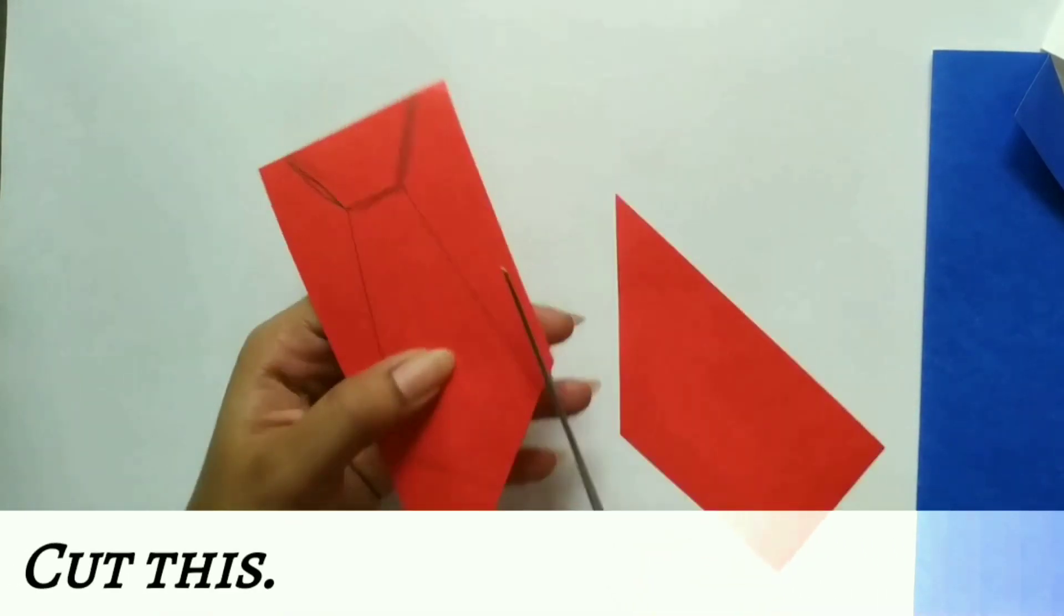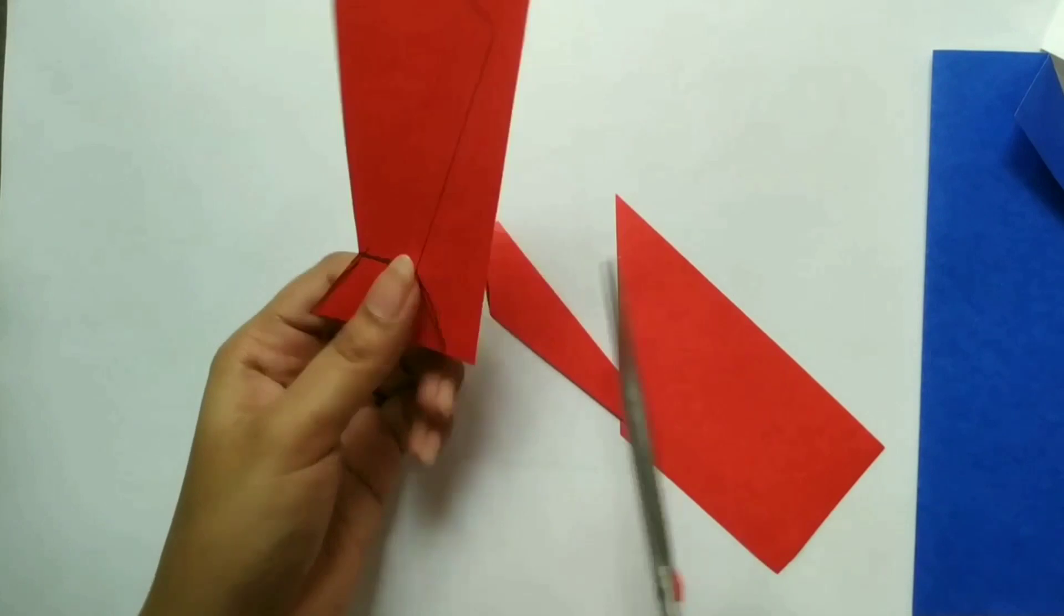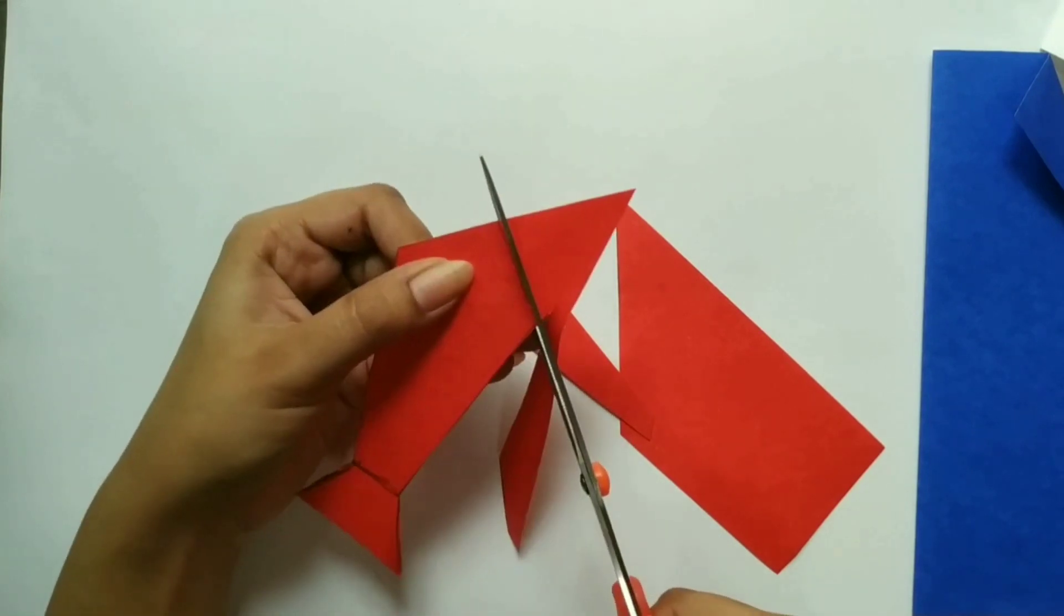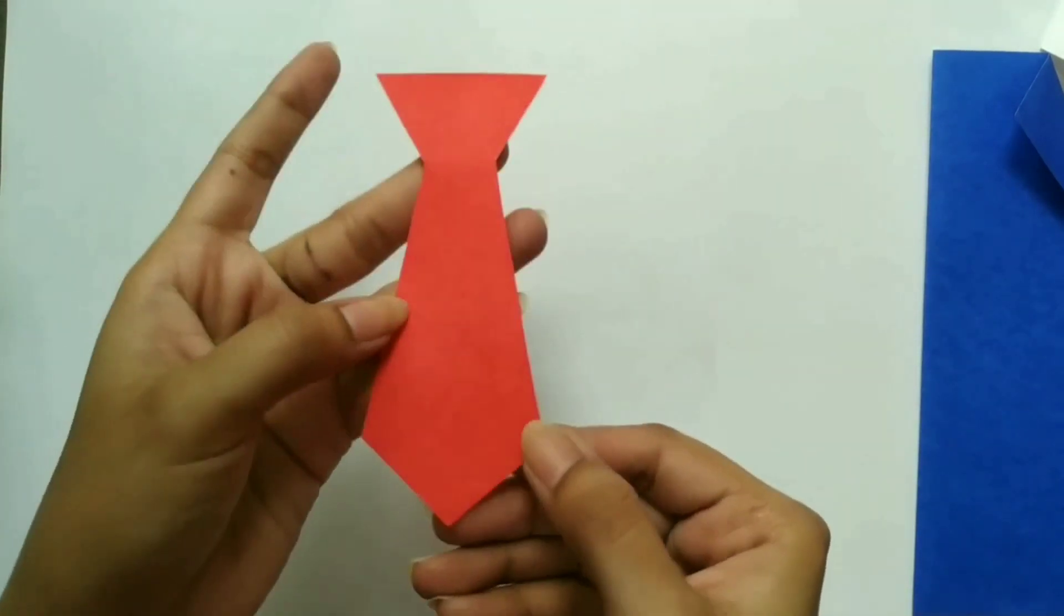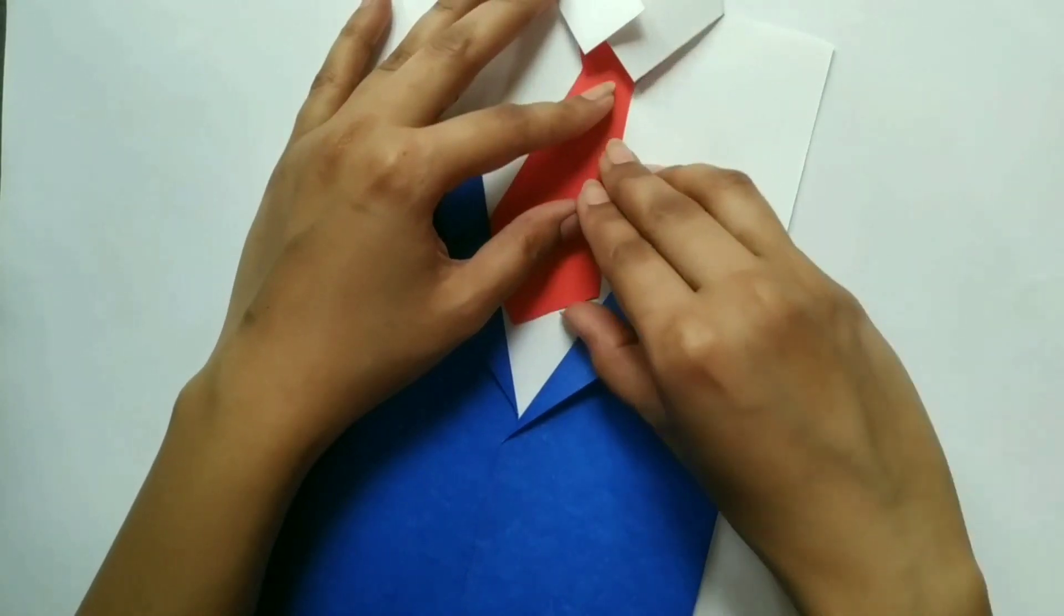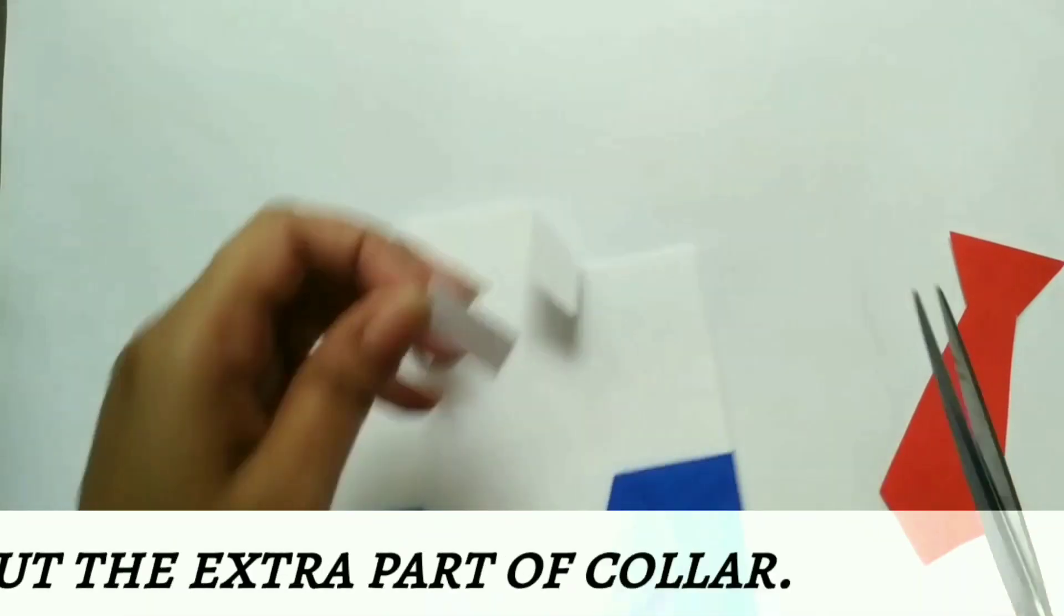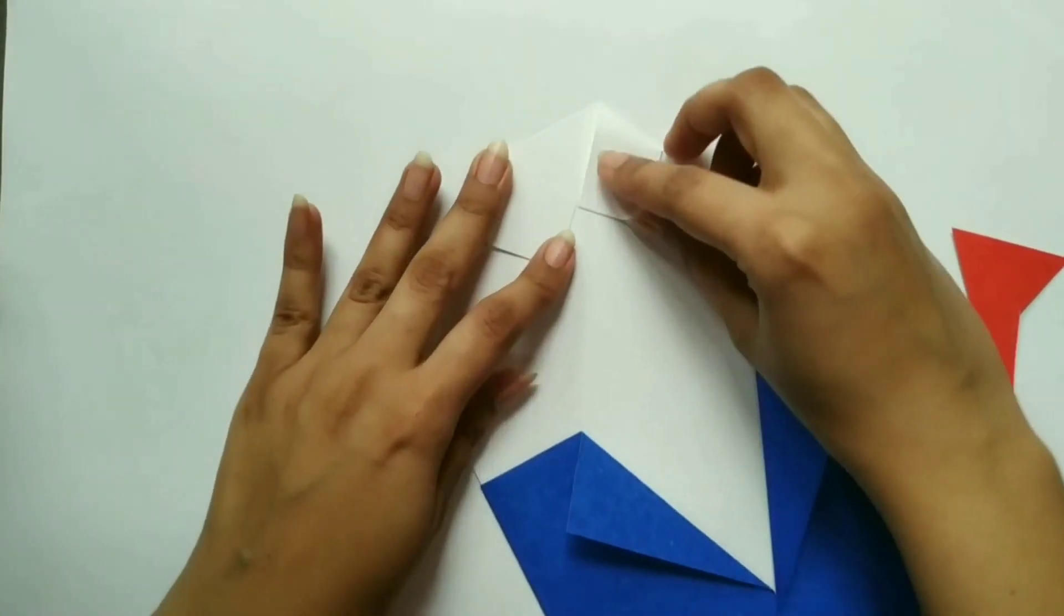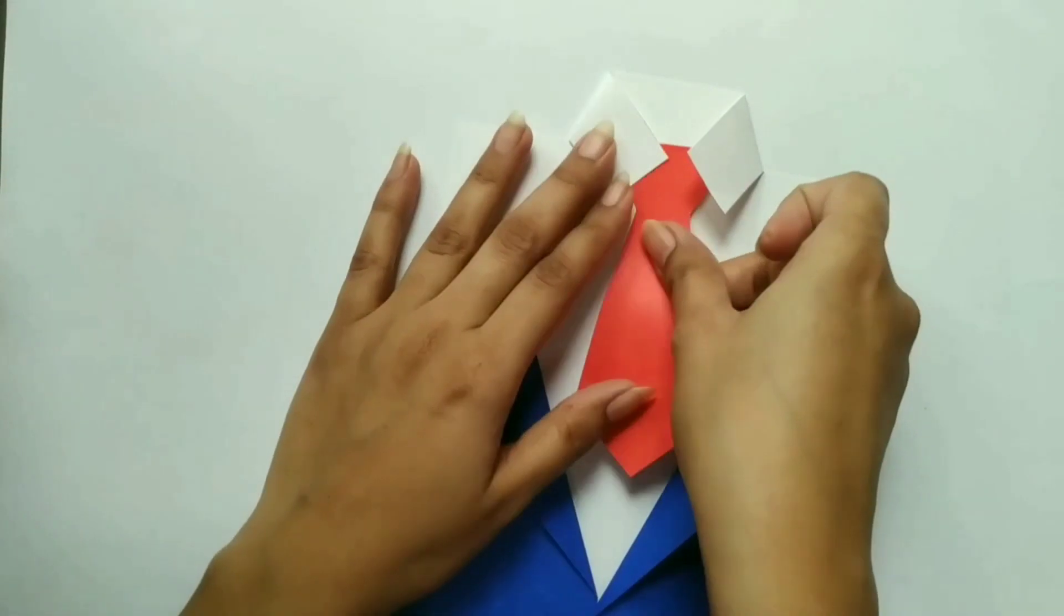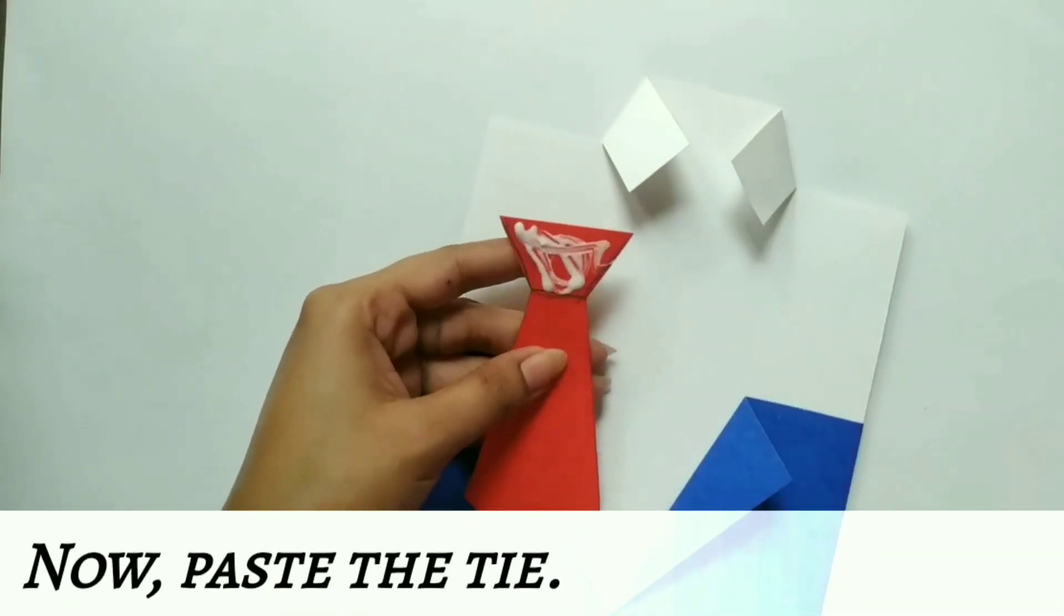Now, cut this tie. Cut the extra part of the collar. Paste this tie at the middle.